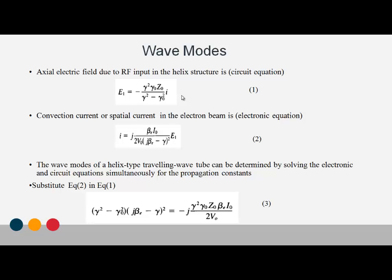The first equation is followed by calculating the convection current, which forms the electronic equation. That is: I is equal to J times beta-E times I-nought divided by 2V-nought, into J times beta-E minus gamma, the whole squared, into E1.